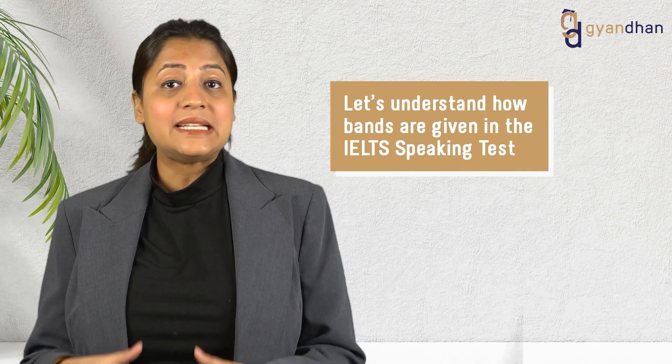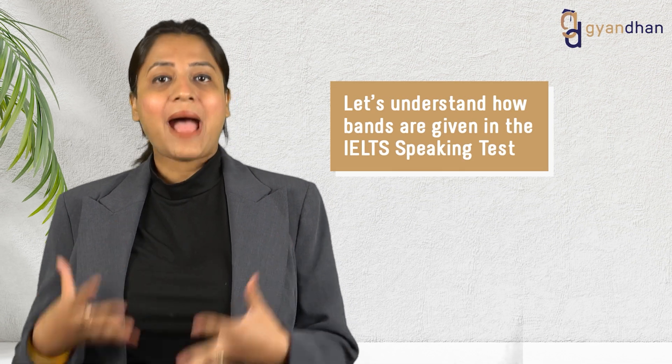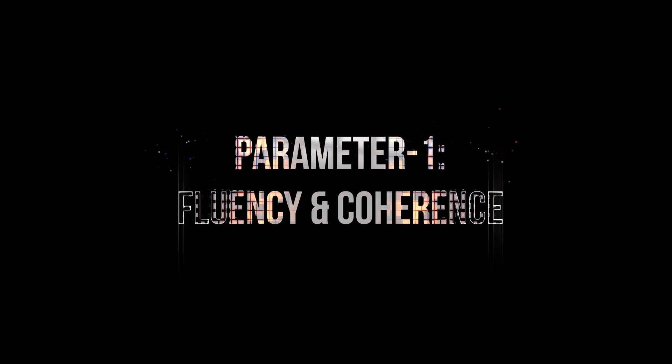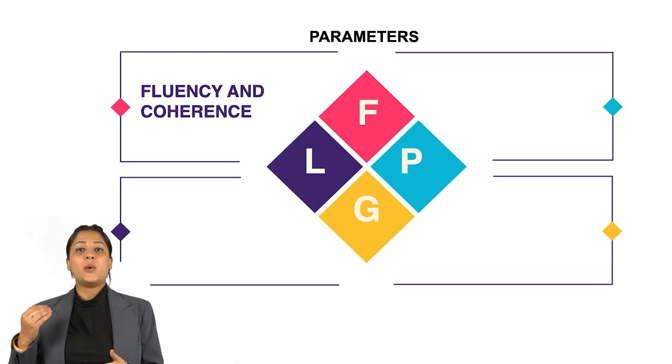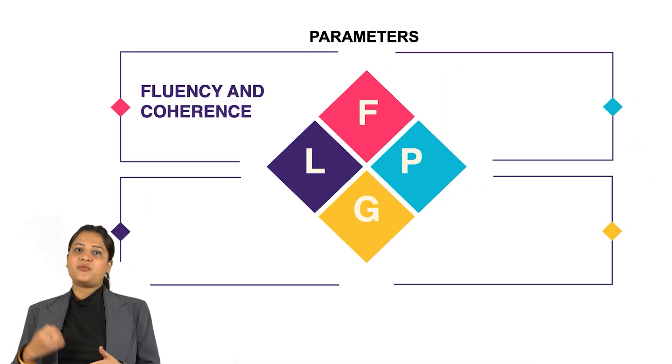Now let's understand how bands are given in the IELTS speaking test. Candidates' performance is marked on the basis of 4 parameters. The first parameter checks how easy it is to follow the test taker — whether all parts of the questions have been addressed in sufficient detail and the ideas are linked naturally.